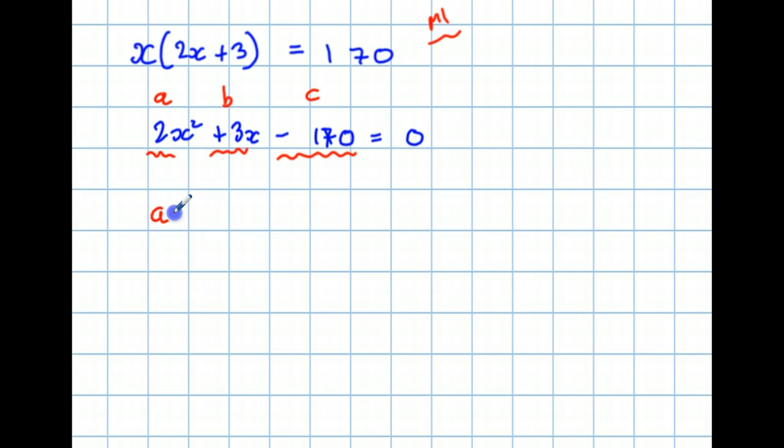So I'll just write that clearly. A in this case is 2. B is plus 3, though I can ignore the plus. Any number without a sign is positive. And C is minus 170.